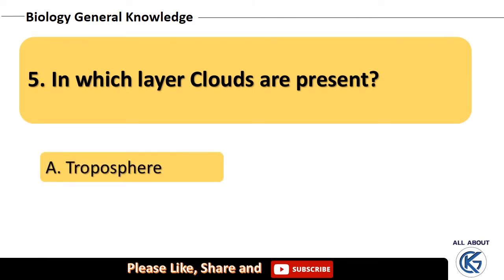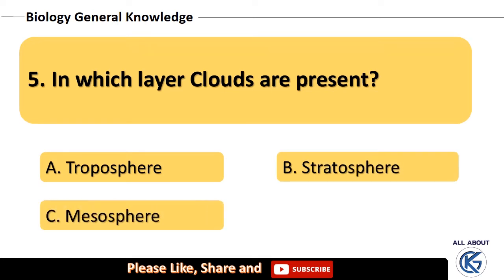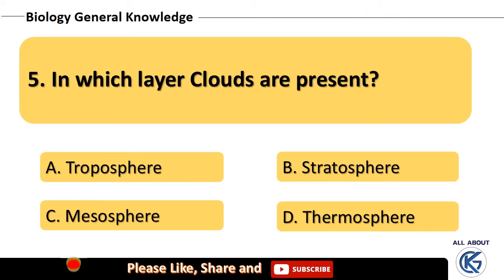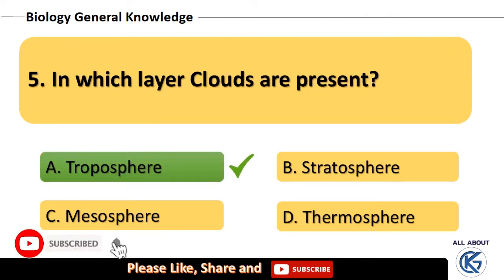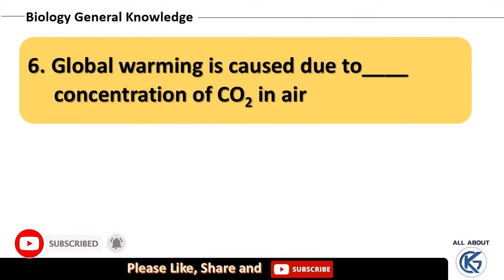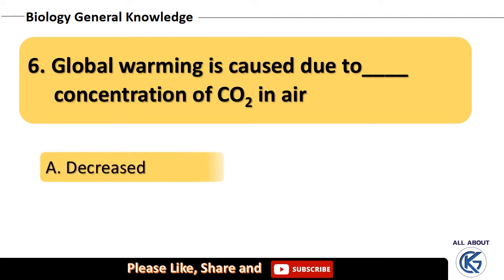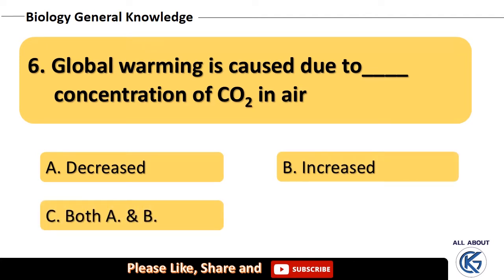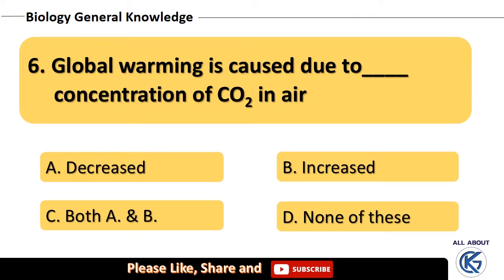In which layer are clouds present — troposphere, stratosphere, mesosphere, or thermosphere? The right answer is troposphere. Global warming is caused due to concentration of carbon dioxide in air being — decreased, increased, both, or none of these? The right answer is increased.